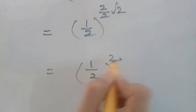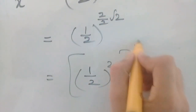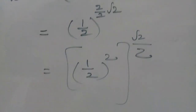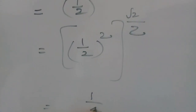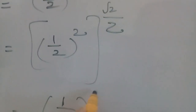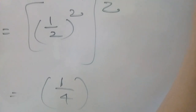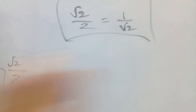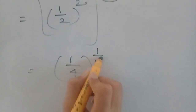2 is written as the square of 1 by 2 whole power, so the remaining exponent is root 2 by 2. That gives us 1 by 2 whole square, which is 1 by 4, raised to the power root 2 by 2. Since root 2 by 2 is equals to 1 by root 2, we get 1 by 4 whole power 1 by root 2.